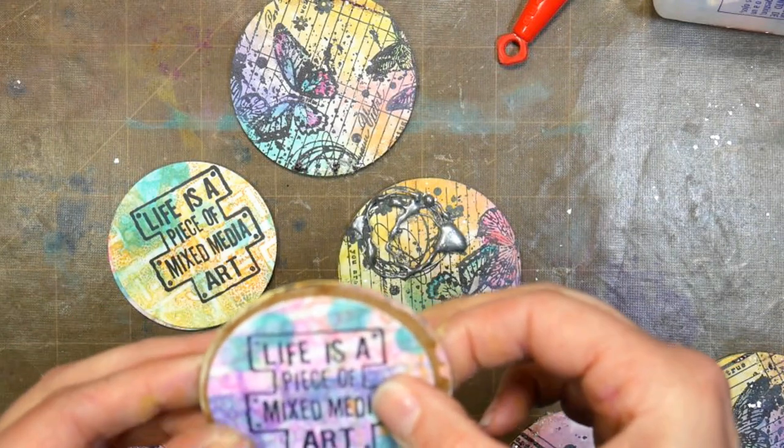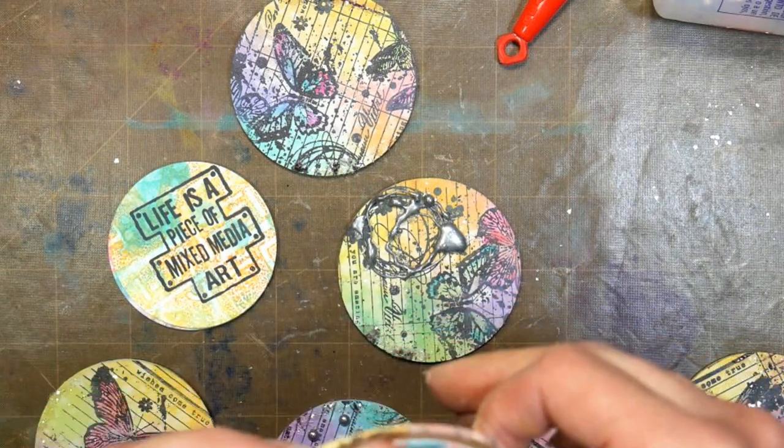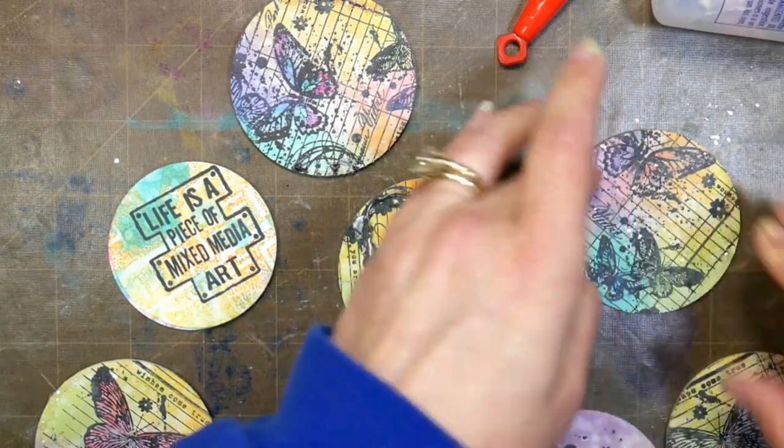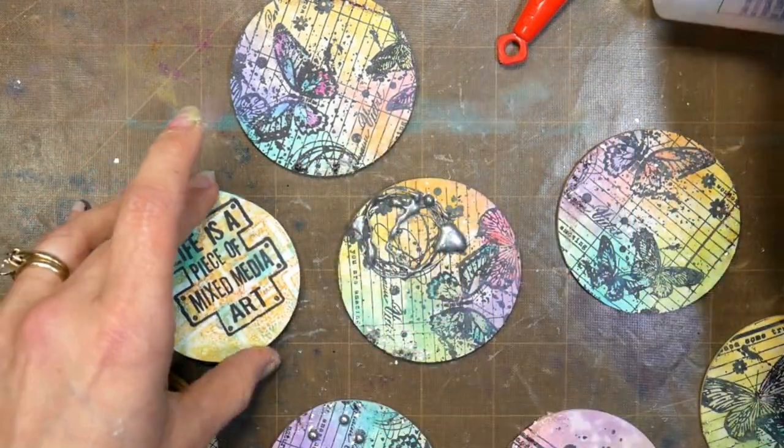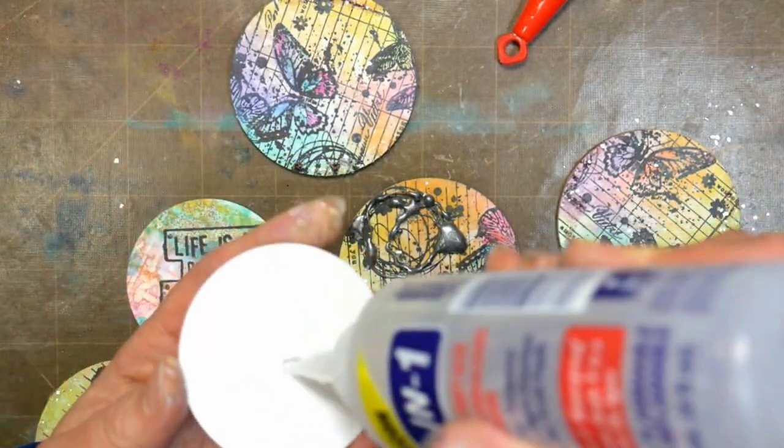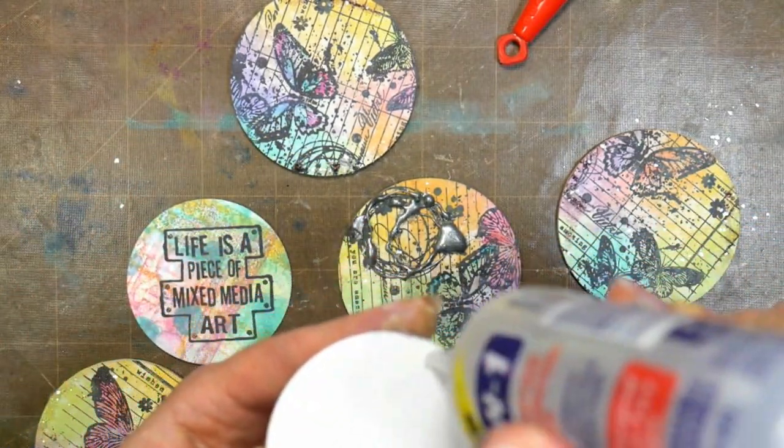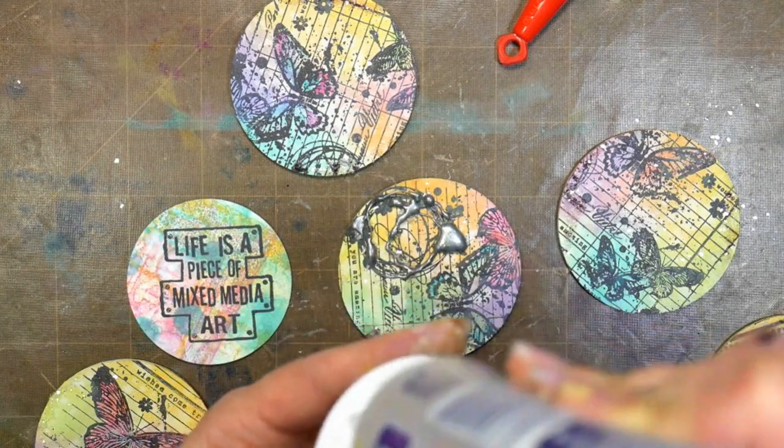If you want a more finished edge to this project you could use some black paint or a black marker and color around the backing paper and the edges of the coins. But honestly I kind of like the look of the rough painty edges on the side, so that's completely up to you.